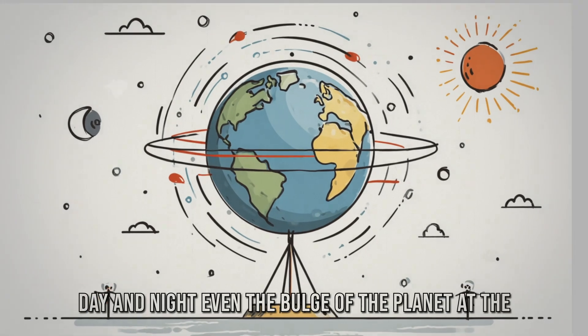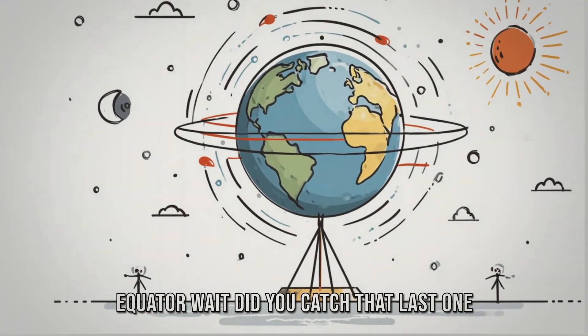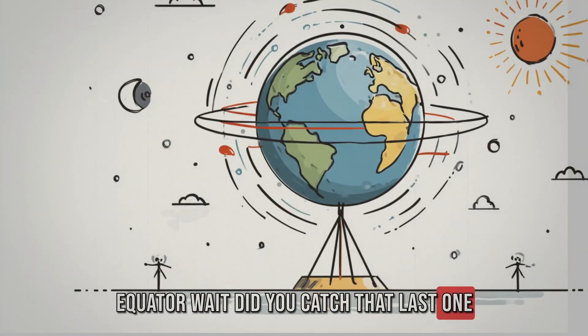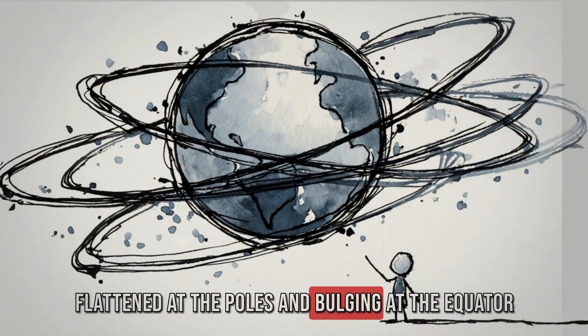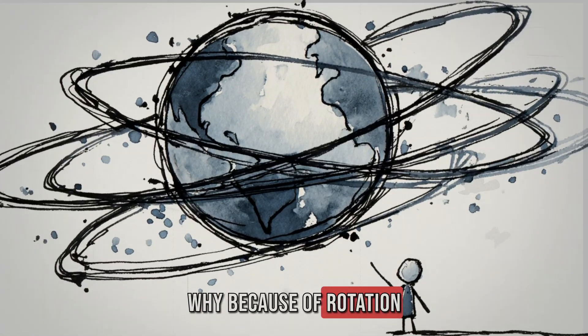Like gravity, day and night, even the bulge of the planet at the equator. Wait, did you catch that last one? The Earth isn't a perfect sphere. It's slightly flattened at the poles and bulging at the equator. Why? Because of rotation.